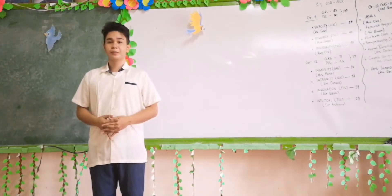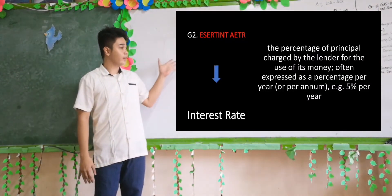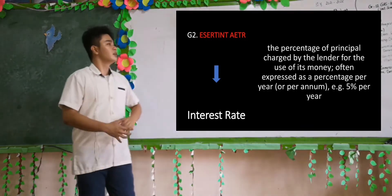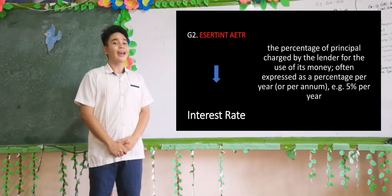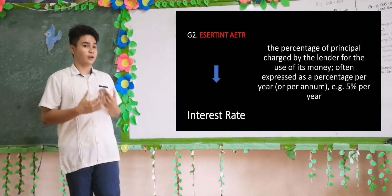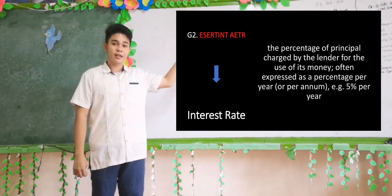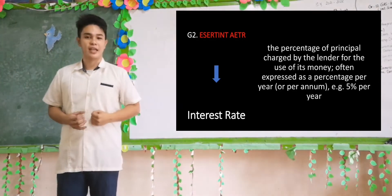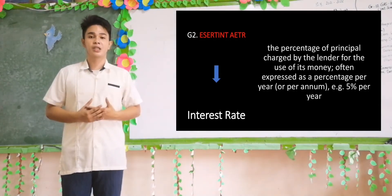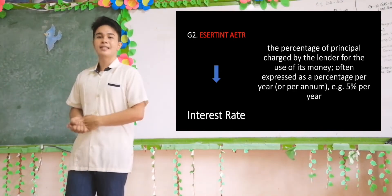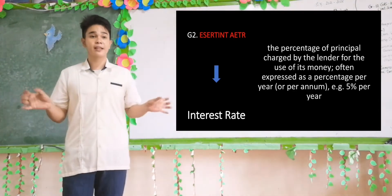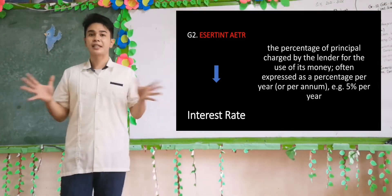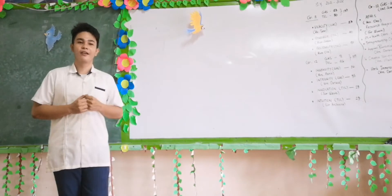Now let's have group two's work. Their jumbled words, when arranged, give: interest rate — and their corresponding definition is correct. Interest rate is the percentage of principal charged by the lender for the use of its money. It is expressed as a percentage per year, or annual — for example, 5% or 10%. Those interest rates depend upon the agreement of the person, company, or policy you are dealing with. Very good, group two.